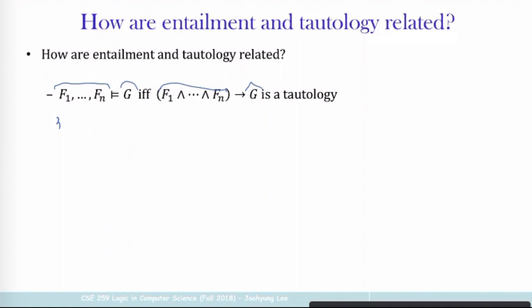Let's look at an example. We have P∨Q and ¬P∨Q — does it entail P? No. If it is not entailed, what is a counterexample? P is false and Q is true. So let's say P is false and Q is true. What happens to the formulas on the left-hand side? P∨Q is true because Q is true, and the same for ¬P∨Q.